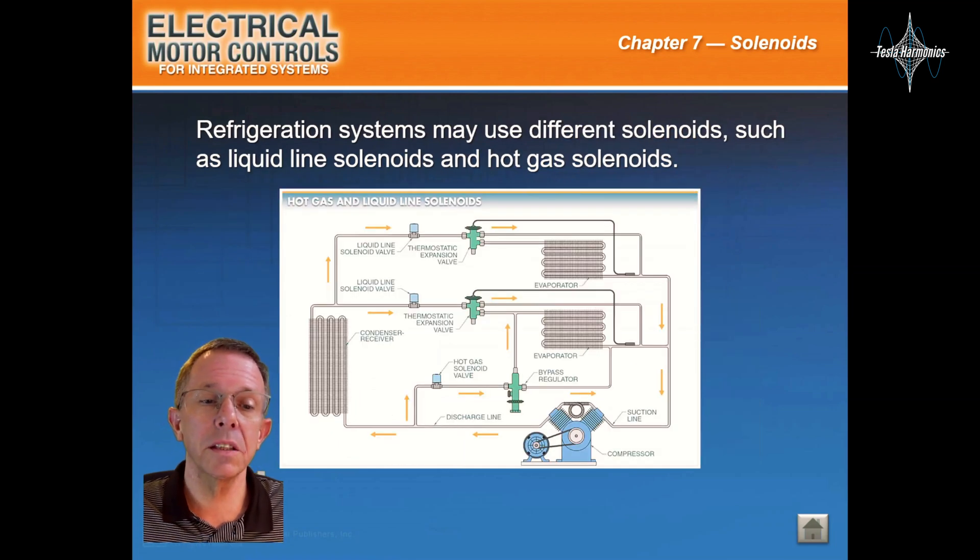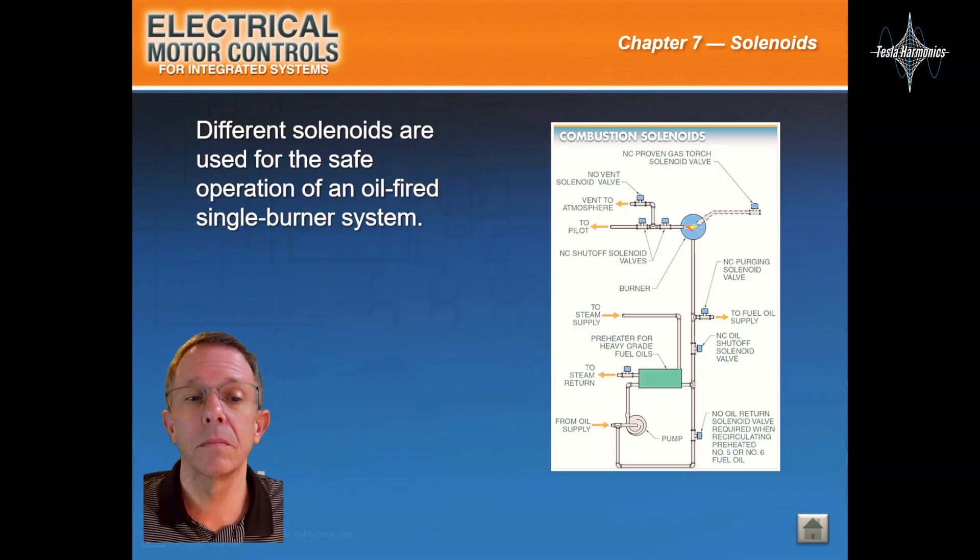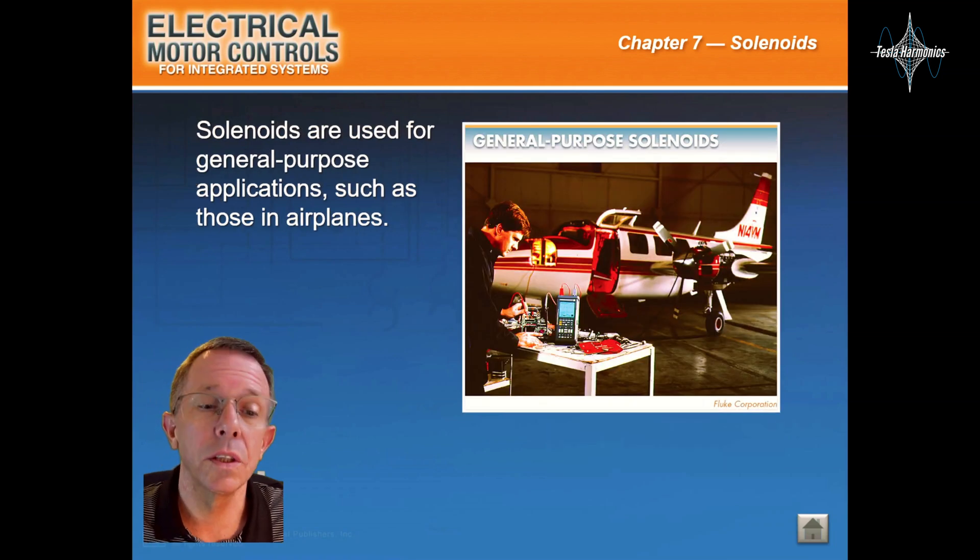Refrigeration systems may use different solenoids such as liquid line solenoids and hot gas solenoids. Different solenoids are used for the safe operation of an oil-fired single burner system. Solenoids are used for general purpose applications such as those in airplanes.